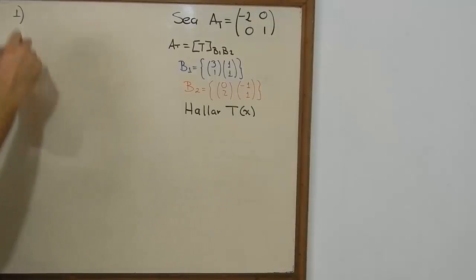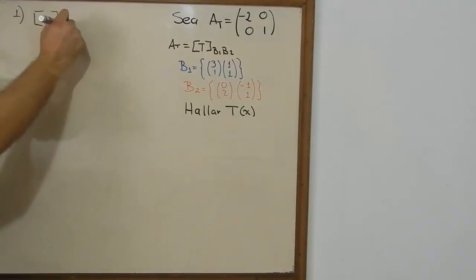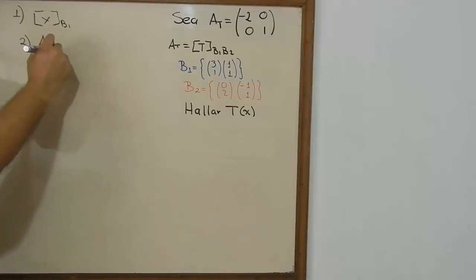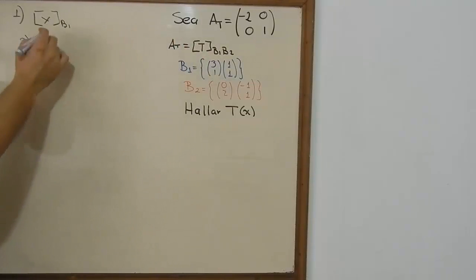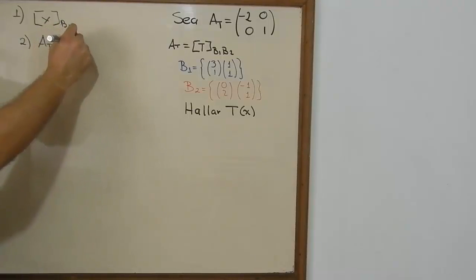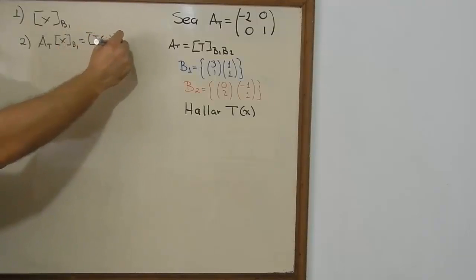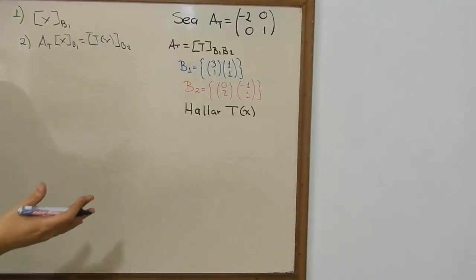We need to follow three simple steps. The first one is to find a vector on base 1, which is going to help us find the linear transformation on base 2. As you can see, you multiply the transformation matrix from B1 to B2 by this vector, and that will give us the linear transformation on base 2.